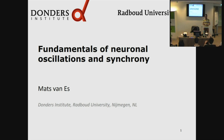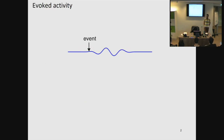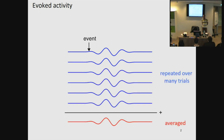I will first take a small recap of what you looked at this morning. Robert talked to you about the difference between evoked activity and induced activity. When you have evoked activity, your brain signal is phase-locked to your events or your stimulus. And when you have multiple of these events, then you can average over trials, and your feature of interest will end up in your average.